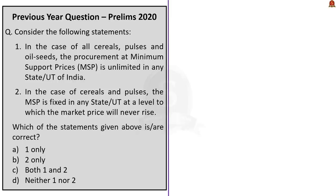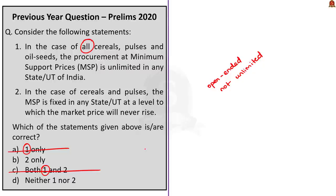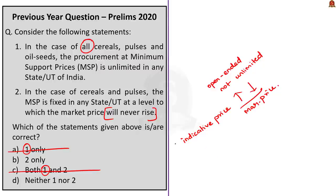Now let us assess the statements. First statement: in the case of all cereals, pulses and oil seeds, the procurement at MSP is unlimited in any state or union territory of India. From the discussion, we know that not all cereals, pulses and oil seeds are covered under MSP. Also, procurement of crops through MSP is open-ended, not unlimited, since buffer stock is limited. So the first statement is wrong. Second statement: the MSP is fixed at a level to which the market price will never rise. Minimum support price is only an indicative price — the market price can rise way above or below MSP. Market players are not legally bound to keep their prices lower or higher than MSP. So this statement is also wrong. The answer is D: Neither 1 nor 2.